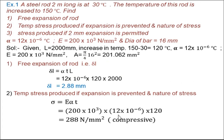Now the second problem. A steel rod 2 meters long is at 30°C. The temperature of this rod is increased to 150°C. Find: the free expansion of the rod; the temperature stress produced if expansion is prevented and the nature of stress; and the stress produced if 2 mm expansion is permitted. Alpha and E are given, and the diameter of the bar is 16 mm. The increase in temperature is 150 − 30 = 120°C.